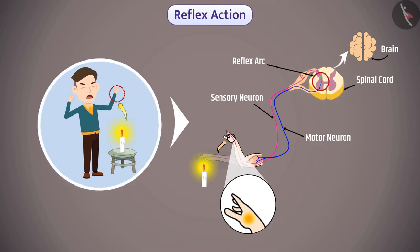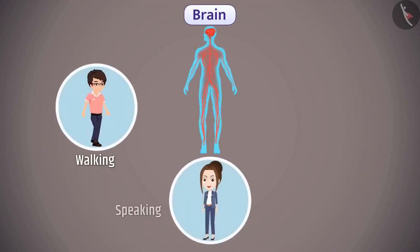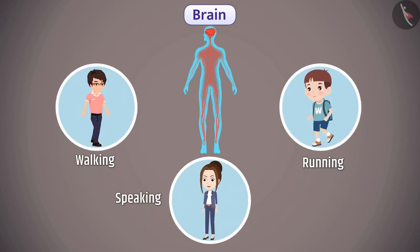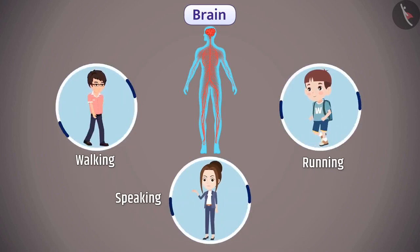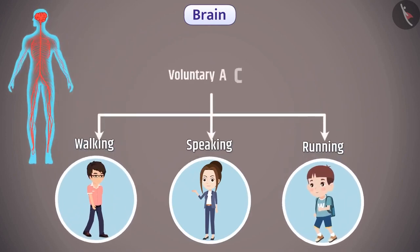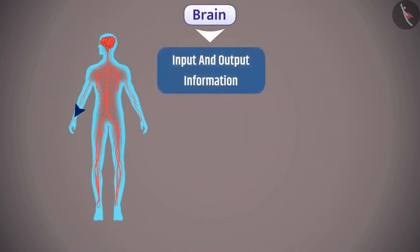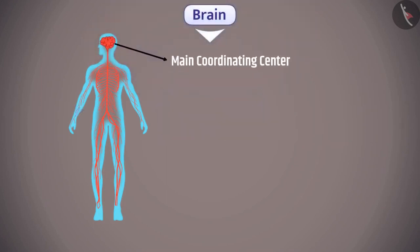Note that the information also goes to the brain. Not all actions we perform are reflex actions. For example, walking, speaking, and running require thinking. Actions which require thinking are called voluntary actions, and in this our brain helps us. The brain integrates various input and output information, so it is called the main coordinating center of our body.